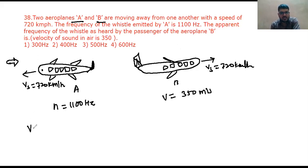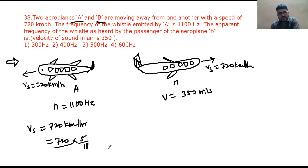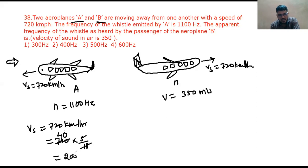Before going forward, convert 720 km/hr: 720 × 5/18 equals 200 meter per second. So Vs equals 200 m/s.